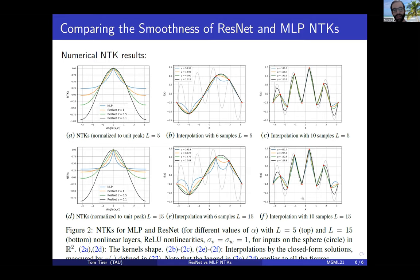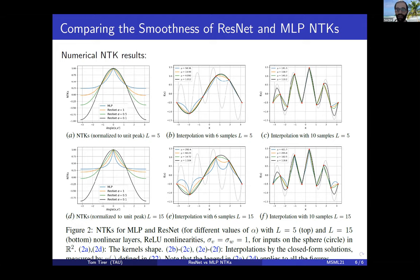Everything observed outside the NTK regime is also reflected in NTK experiments. The kernels in blue for MLP and other colors for ResNet show that both the kernels themselves are smoother and their interpolations are smoother, with the distinction increasing with depth. While the NTK simplification does not always capture everything about deep residual networks, it does capture the effect of attenuating the residual block and the smoothness difference between ResNet and MLP. Thank you.